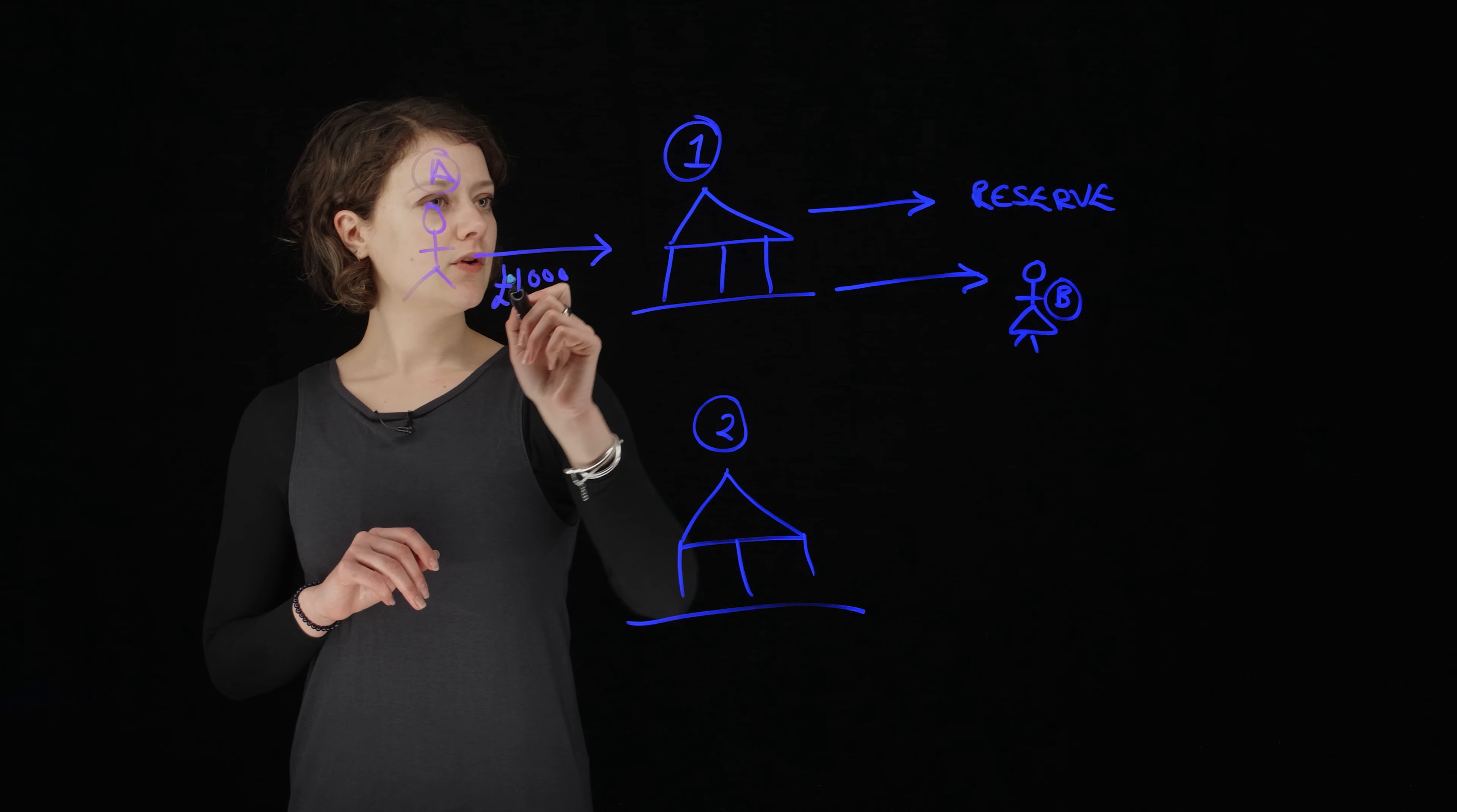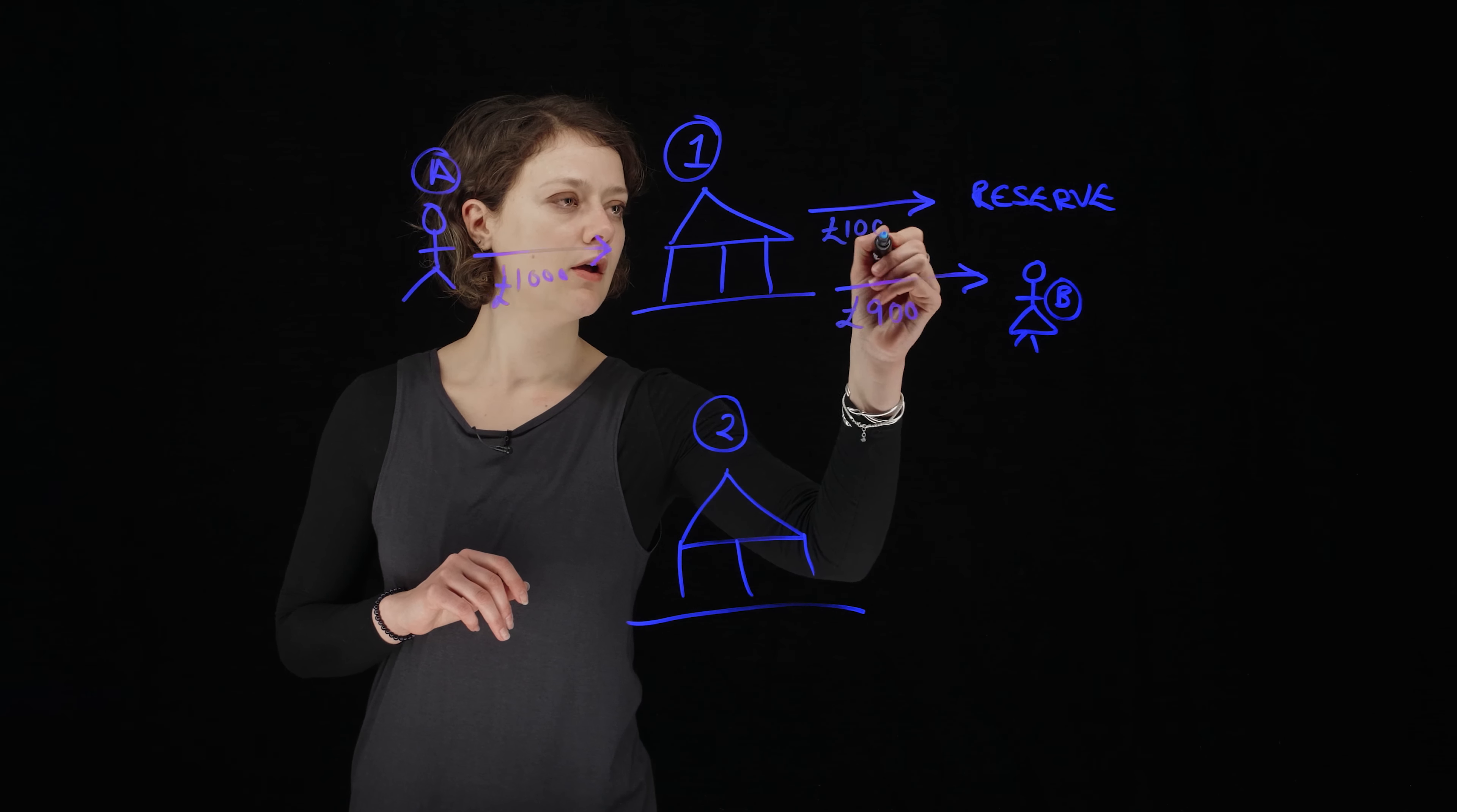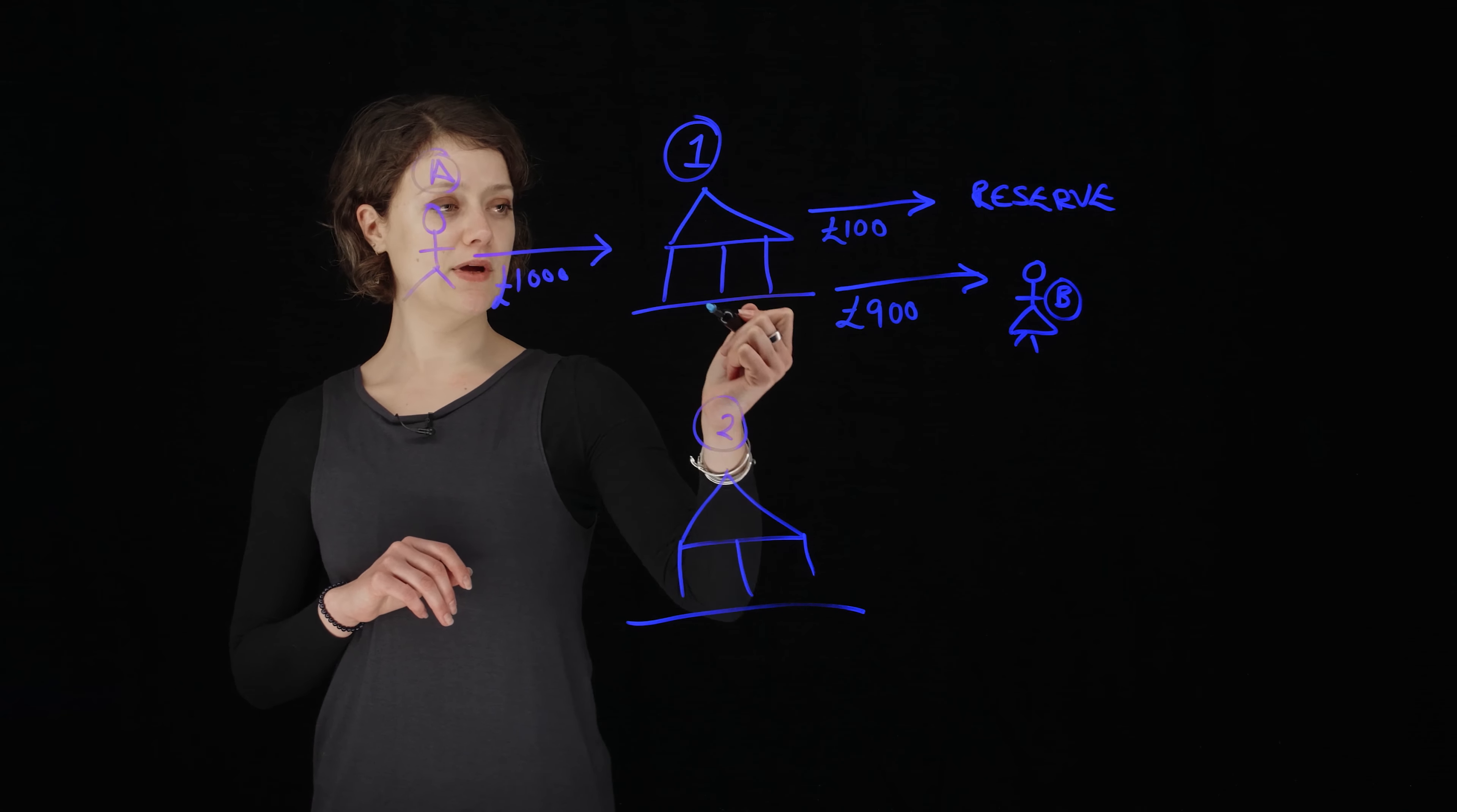But this thousand pounds will be lent out to person B. And as I said, they won't give them the whole amount. So let's say they give them 900 pounds and 100 pounds goes into the reserve. Great. So at this point we've got money going in, money coming out, two of the most central functions of banking.